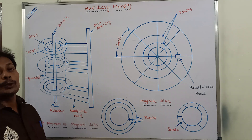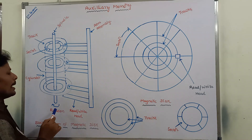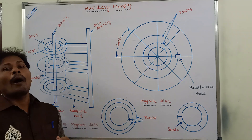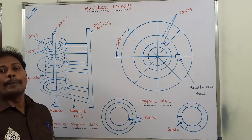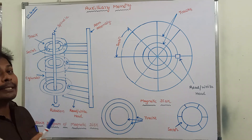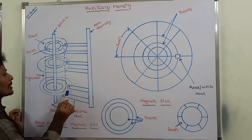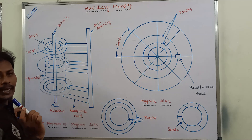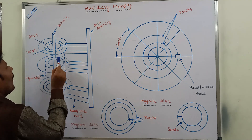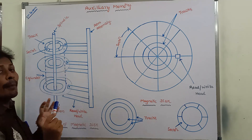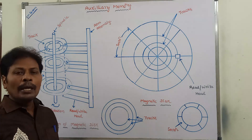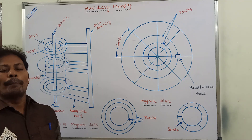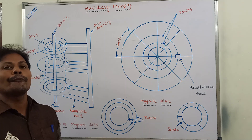All the discs are rotated together at high speed. Bits are stored on the magnetic surface in spots along the concentric circles. On the concentric circles, some magnetic spots are available, and in those magnetic spots we store binary information in the form of bits.